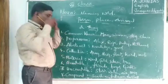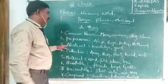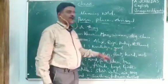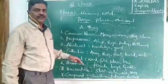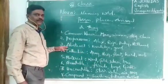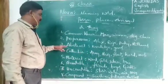Abstract noun means which cannot be seen. For example, knowledge, goodness, happiness, joy — these things are abstract nouns which cannot be seen.